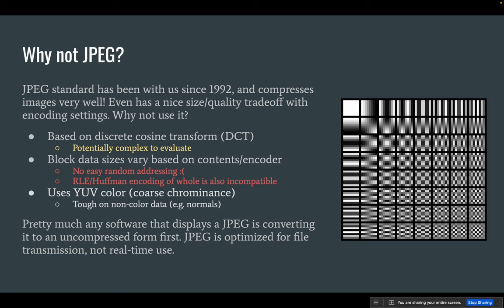There are some other big problems with JPEG. The block sizes vary based on content — the whole point is to store as few coefficients with as few bits as possible, but this is a problem for the GPU because you need to address blocks quickly, and if they're all variable sizes it's very hard to know where the block you're interested in resides in memory. You'd need some sort of indexing table, and all of a sudden the size gets much bigger. Additionally, there's a run-length encoding that happens over the entire JPEG file, responsible for a significant portion of its compression ratio, and that's an end-to-end whole-file operation that's really not compatible with GPU random access. JPEG also uses the YUV color space and undersamples the chrominance aspects, focusing mainly on brightness. If you're not storing color data this is potentially very destructive — normal maps are a good example.